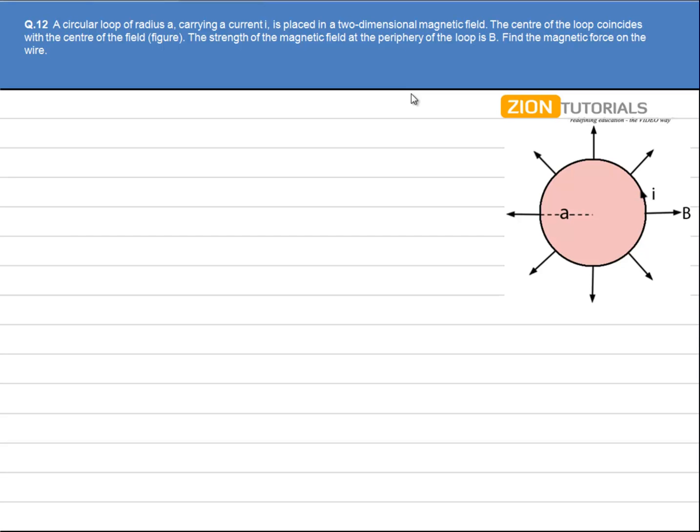Now one thing you should note is that we know that force is given by BIL sin of theta. It can be written as I DL cross B. Now have a look at the figure.